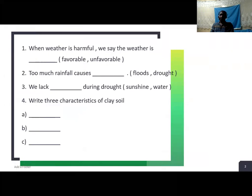Question 1. When weather is harmful, we say the weather is dash - favorable or unfavorable. You pick the correct answer.